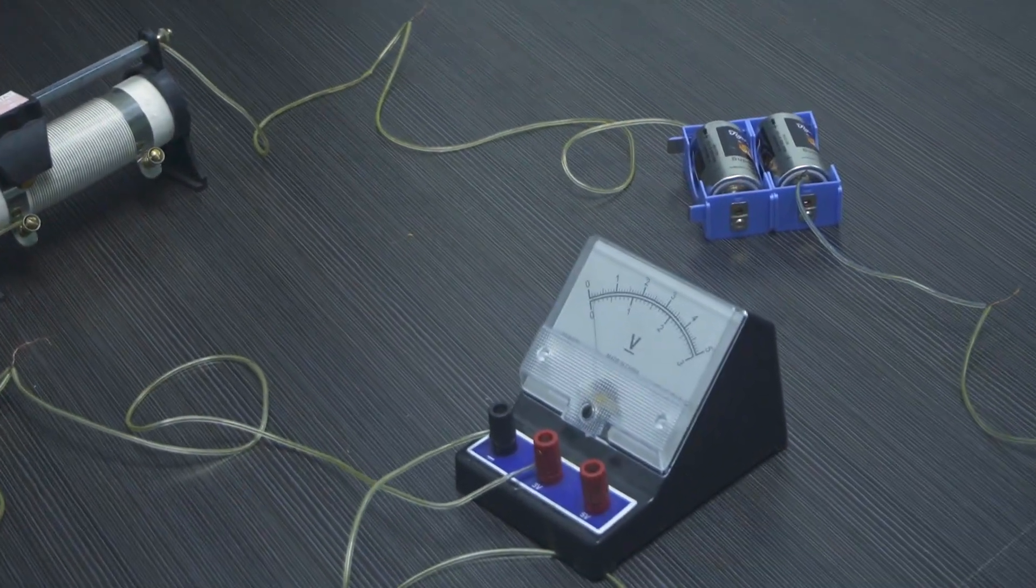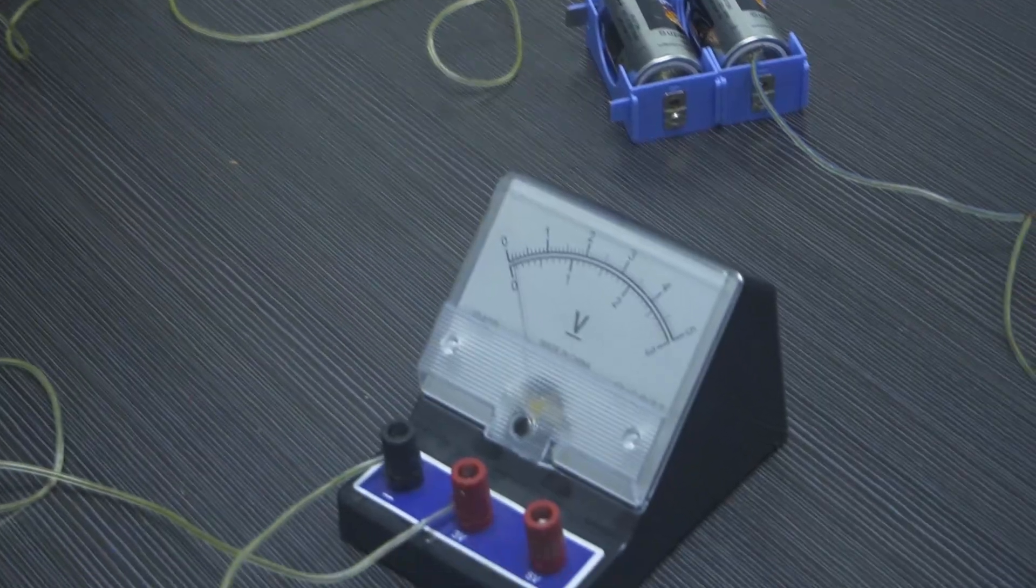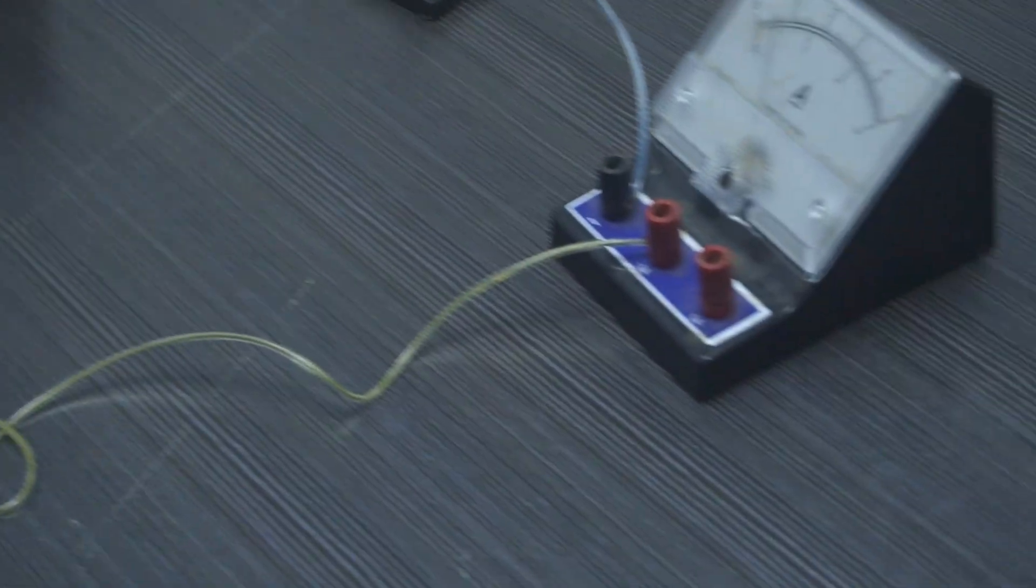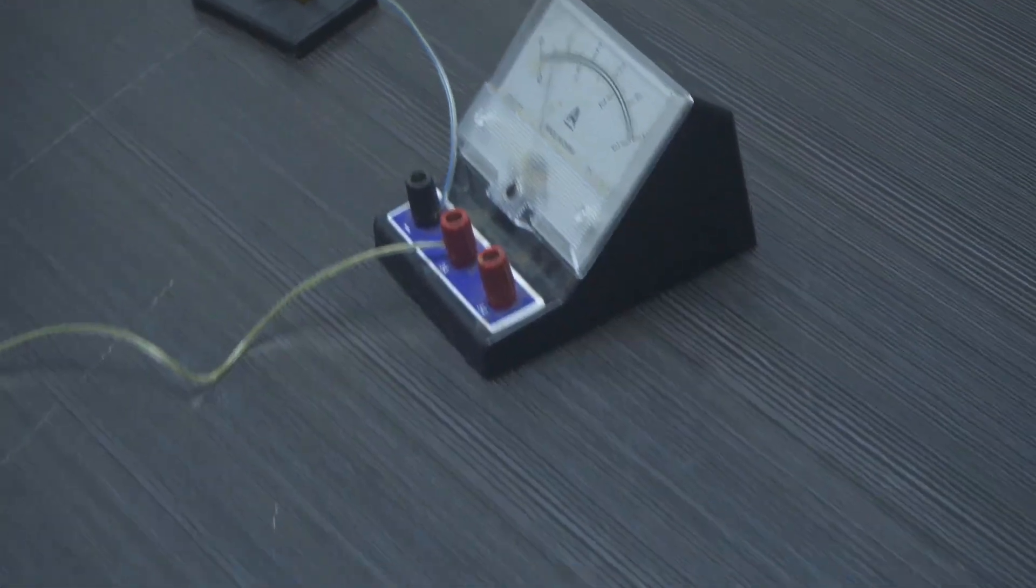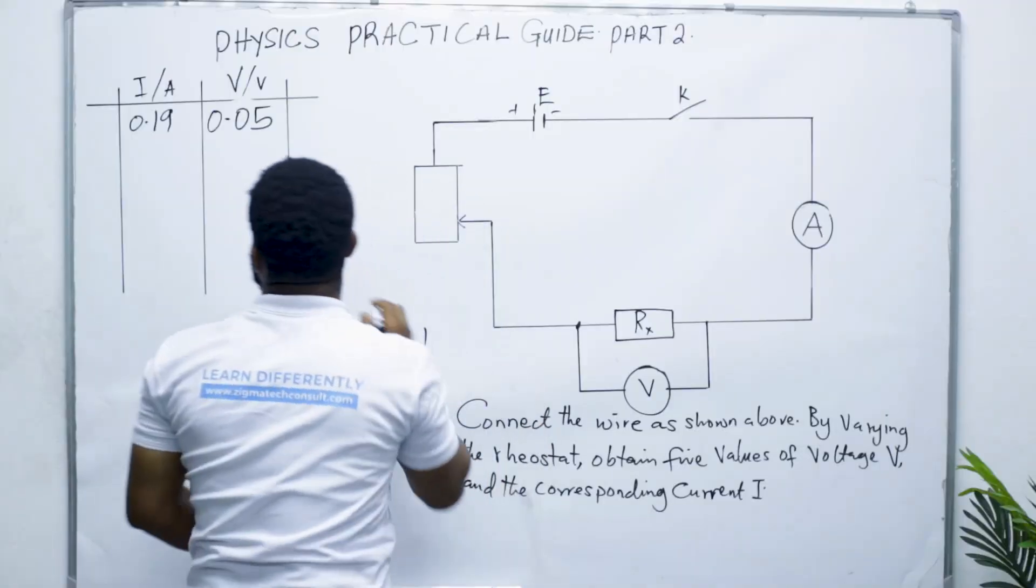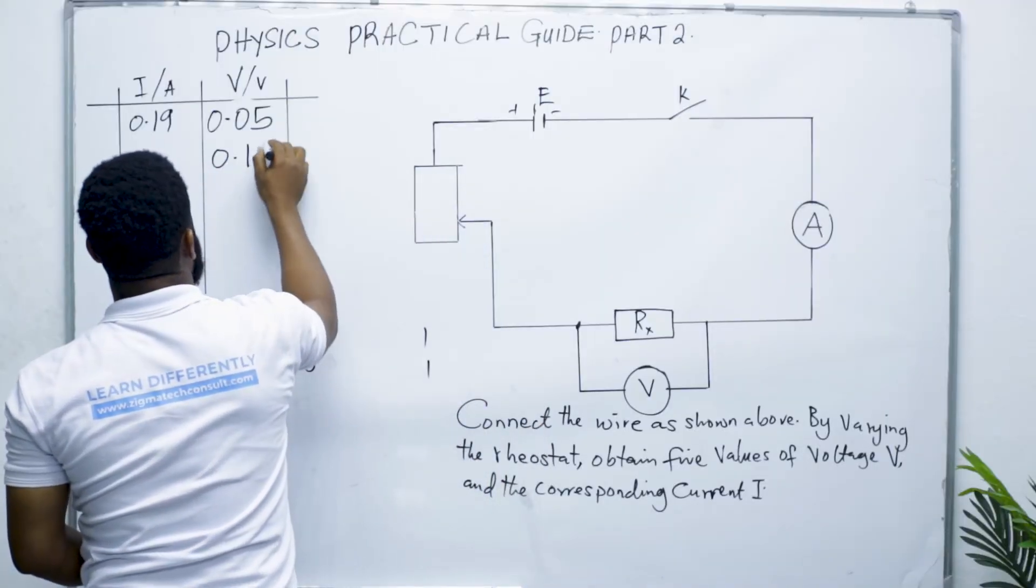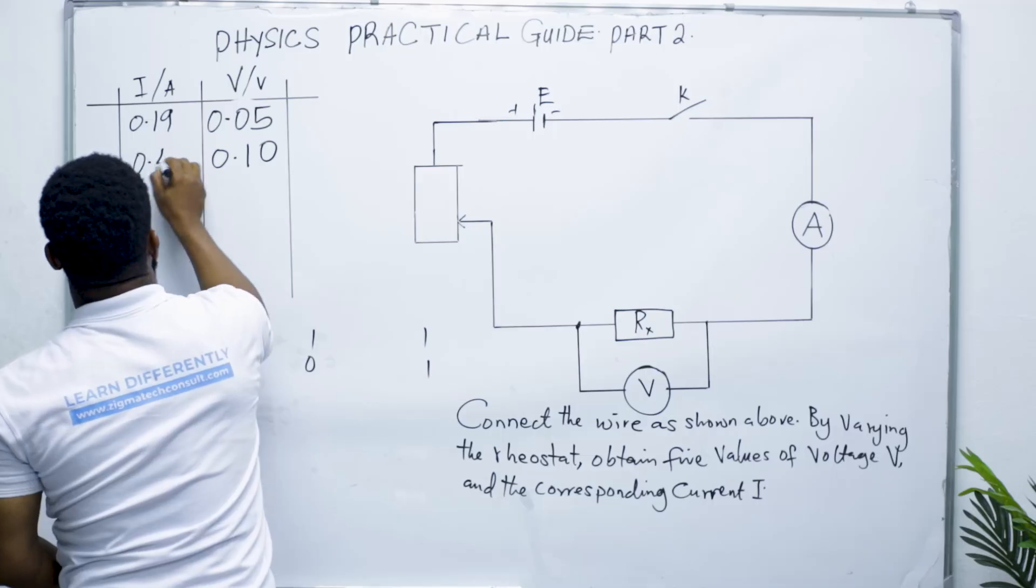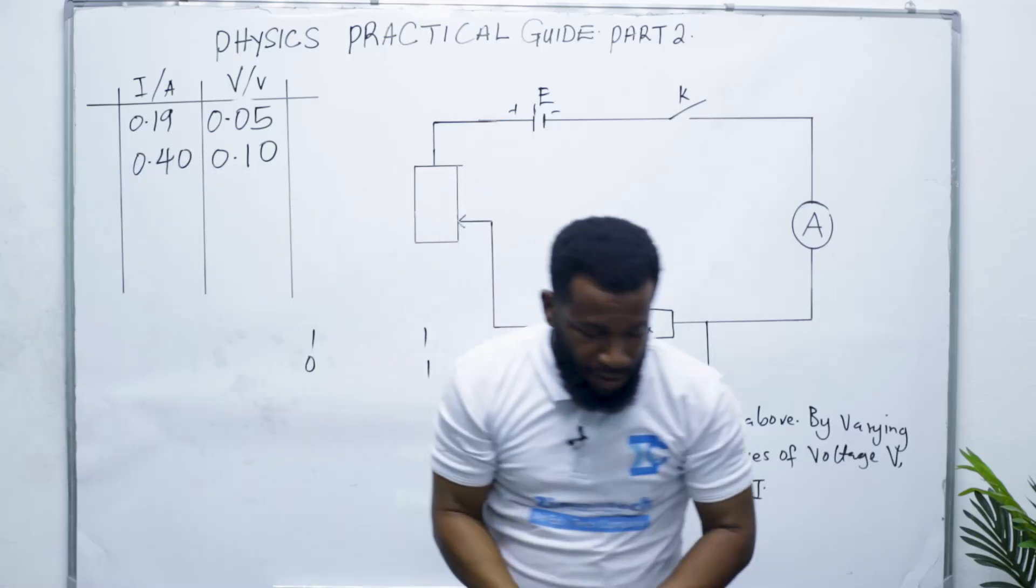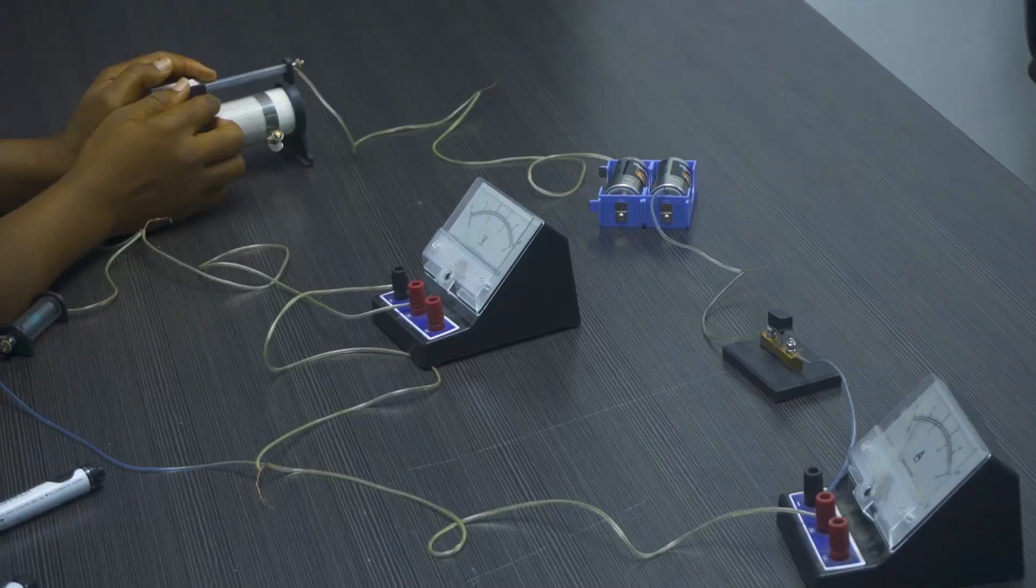Good, this is 0.1 and this is 0.4. 0.1 for V, yes 0.10, and 0.40. Yes, correct. All right, so I'm shifting again.